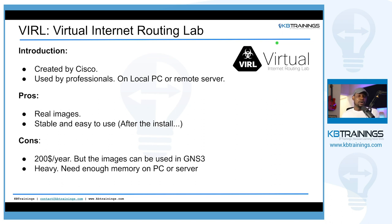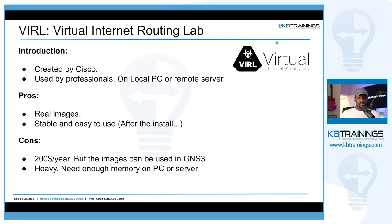The cons for VIRL are that it's not free — it's about 200 American dollars per year. You can use the images from VIRL on GNS3, but you still have to pay for the 365-day license. It's also very heavy, so you need a good amount of memory on your PC or server to run VIRL.